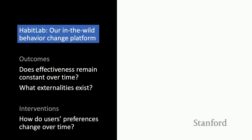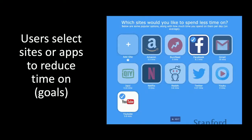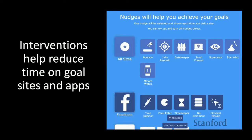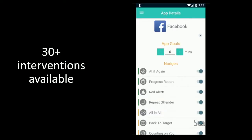The structure of this talk is: first, I'll introduce the HabitLab behavior change platform, then discuss three studies — two discussing outcomes and one discussing interventions. HabitLab is our behavior change platform, and we currently have 12,000 active users in the wild across the browser, and there's also an Android version. The basic mechanism is that during onboarding, you select sites or apps that you want to reduce time on — we call these goals — and we have a number of interventions to help you reduce time on these goal sites and apps.